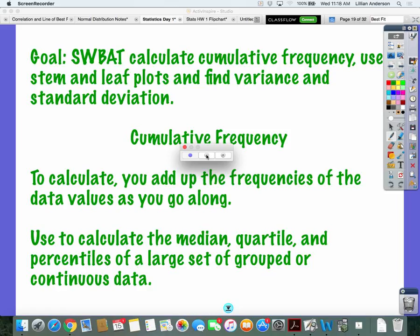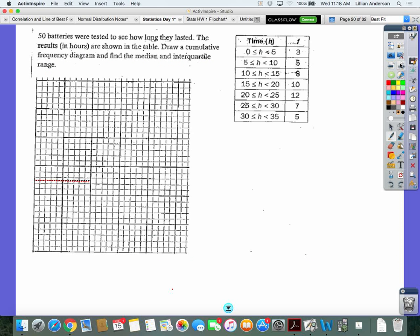To calculate the cumulative frequency, what you do is you add up the frequencies of the data values as you go along. It's cumulative, it's as you go along, it's the sum. The cumulative frequency curve is another way to calculate the median, the quartiles, percentiles, for large sets of grouped or continuous data. We have 50 batteries tested to see how long they lasted. The results in hours are shown in the table. You have to draw a cumulative frequency diagram and find the median and interquartile range.